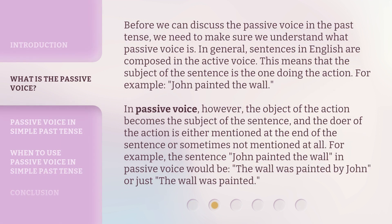Before we can discuss the Passive Voice in the Past Tense, we need to make sure we understand what Passive Voice is. In general, sentences in English are composed in the Active Voice. This means that the subject of the sentence is the one doing the action. For example, 'John painted the wall.' In Passive Voice, however, the object of the action becomes the subject of the sentence, and the doer of the action is either mentioned at the end of the sentence or sometimes not mentioned at all.